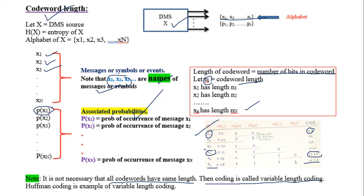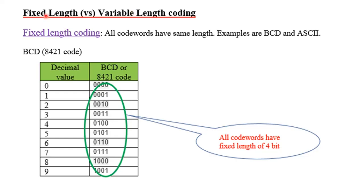Coding can be fixed length or variable length. Examples of fixed length coding are BCD (binary coded decimal) and ASCII. In BCD code, numbers from 0 to 9 each have a 4-bit representation. All codewords have a fixed length of 4 bits, which is why this is called fixed length coding.